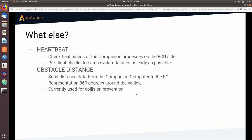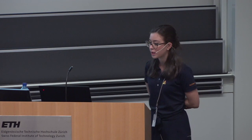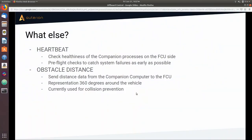Beyond the messages used to control the vehicle, other messages are also exchanged between companion and flight controller. For example, the heartbeat message allows checking the healthiness of companion processes from the flight controller side. In the commander, there are checks on companion process health with appropriate failsafes if anything is not running correctly. If obstacle avoidance is enabled from boot, there are also pre-flight checks to catch system failures as early as possible, moving towards a more product-like integration of off-board features into PX4.